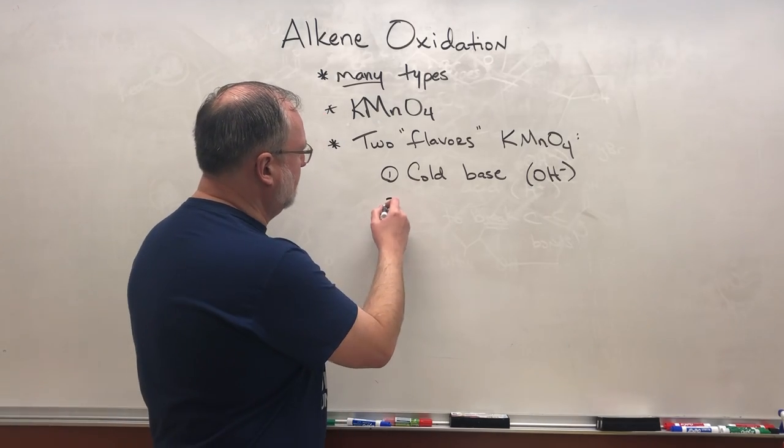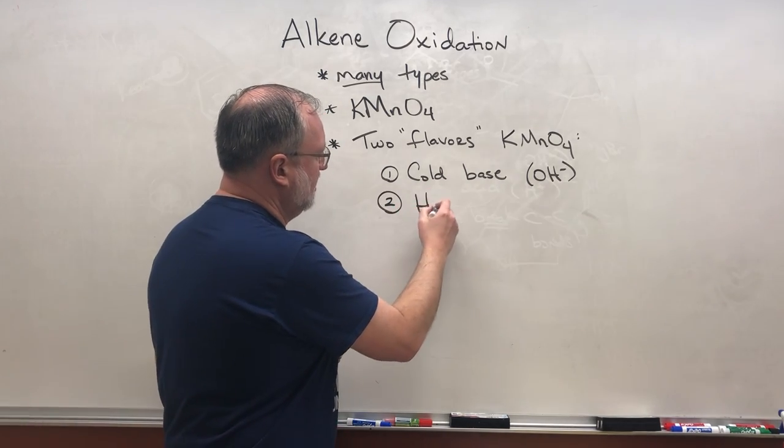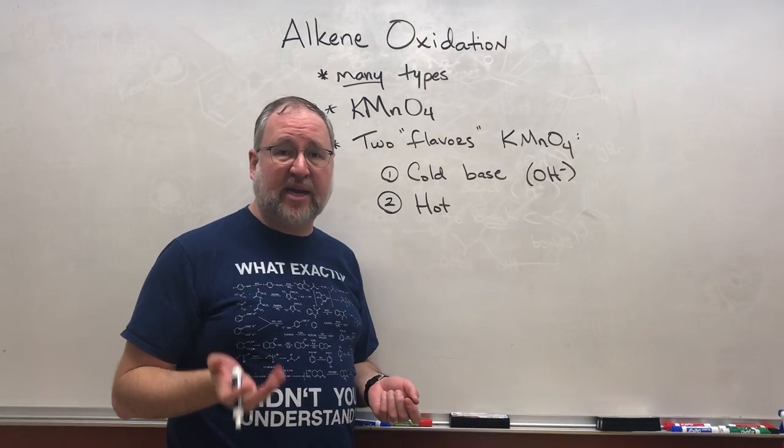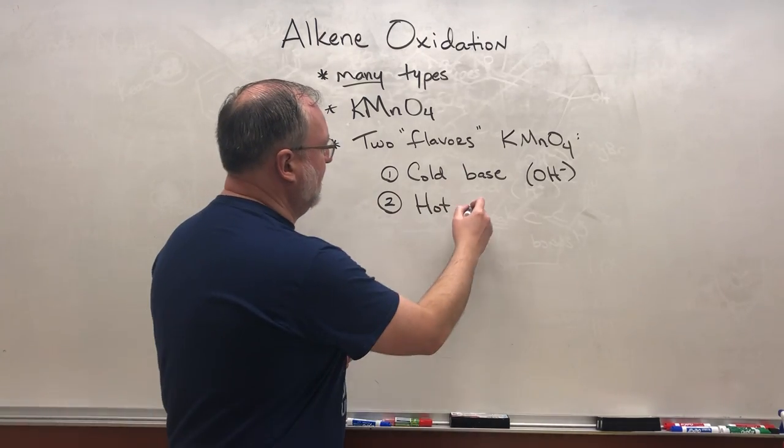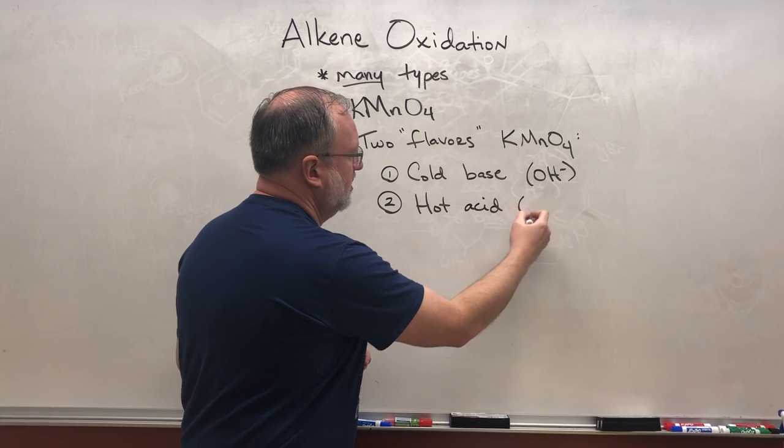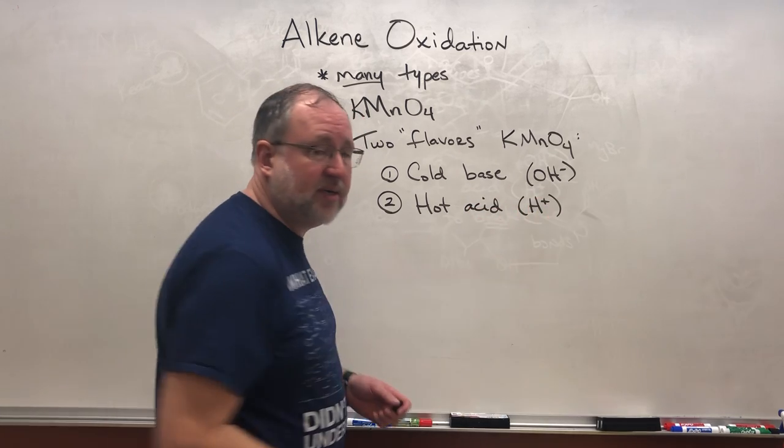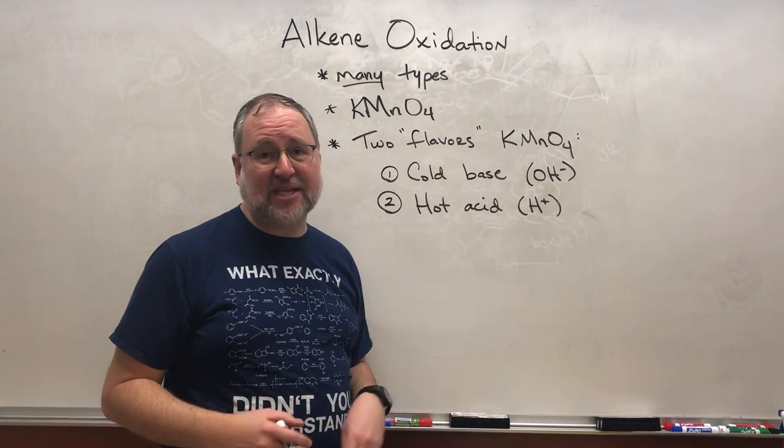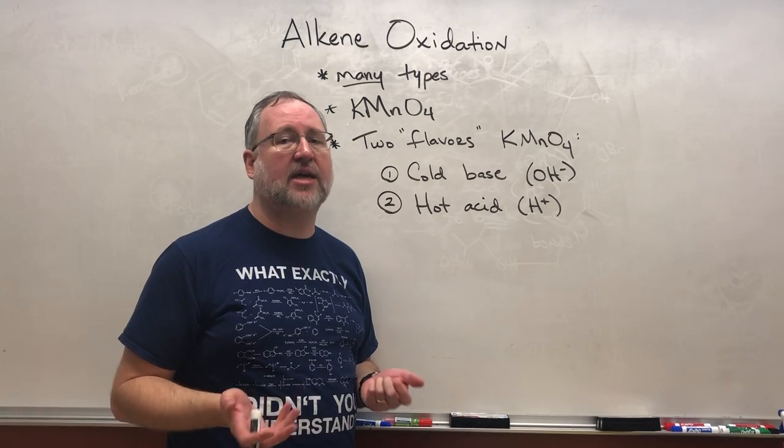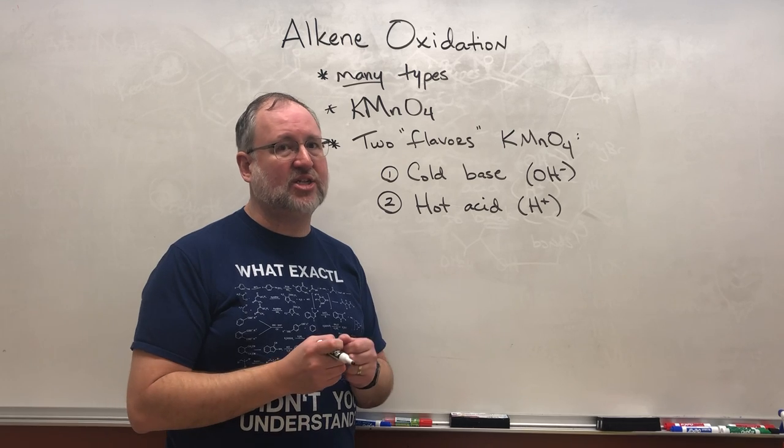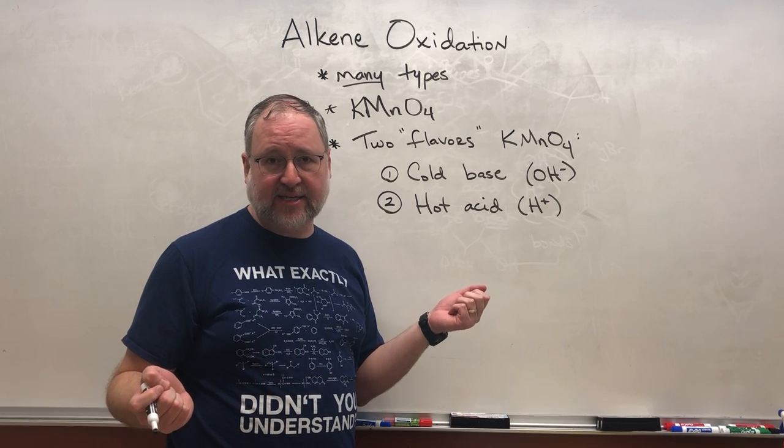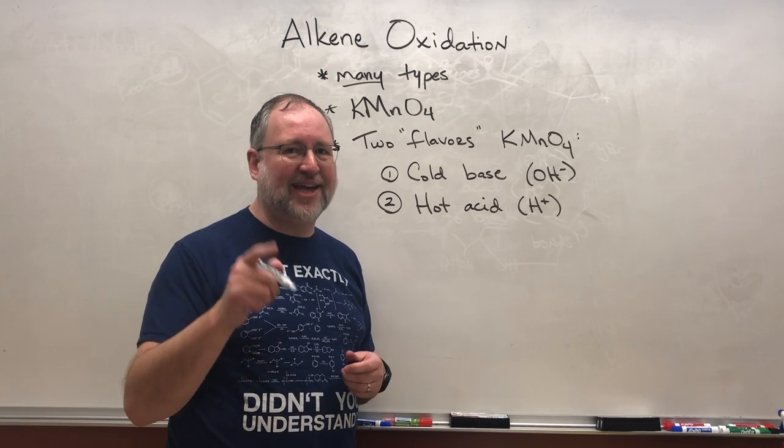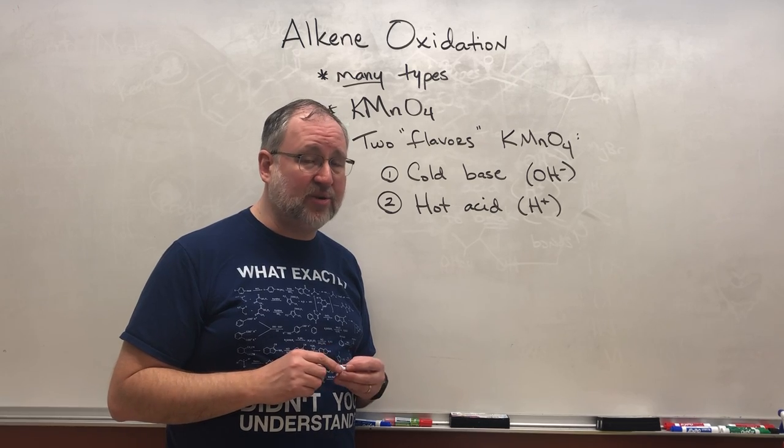And the other type is if you still use potassium permanganate but you make it hot and you add some acid, and of course sometimes we indicate acid by just writing H plus. In hot acid, potassium permanganate is a much more powerful oxidizing agent and they can actually rip that double bond apart and that's one of the reasons why alkene oxidation is pretty exciting.